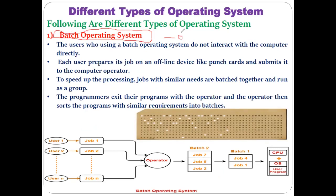The first operating system is the batch operating system. This is a very old kind of operating system, used in the period of 1960–70 when there was no modernization of computers. Before we see the technical details, let's look at a real-life example to understand how the batch operating system works.